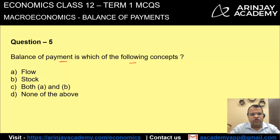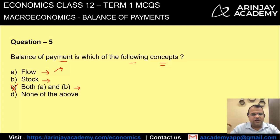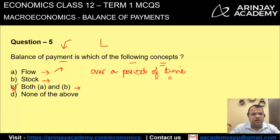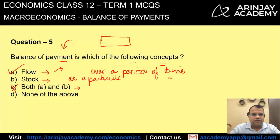Balance of payment — is it a flow concept, a stock concept, or both? These two are opposites, so it cannot be both. A flow is a transaction that takes place over a period of time. When we prepare a balance of payment statement, it is an accounting statement for a given period of time. Therefore, balance of payment is a flow concept. A stock concept is measured at a particular point in time, which does not apply here. The correct answer is option A.